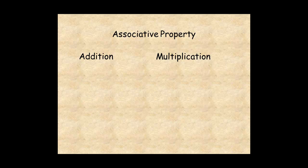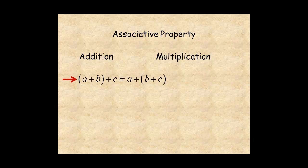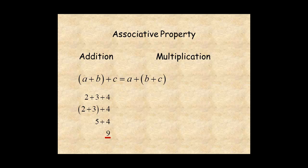For the associative property of addition, when you add three numbers, the order of addition doesn't matter. For example, to add two plus three plus four, you could add two plus three and then add four for nine. Or, you could add three plus four and then add two for nine.